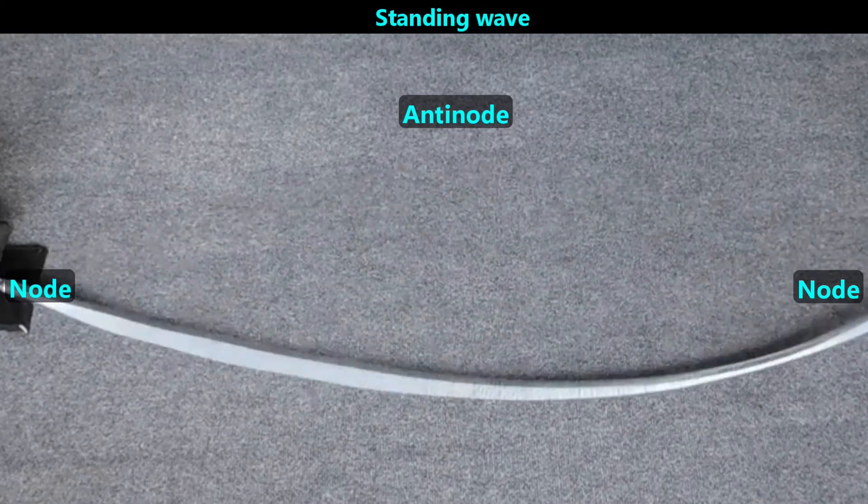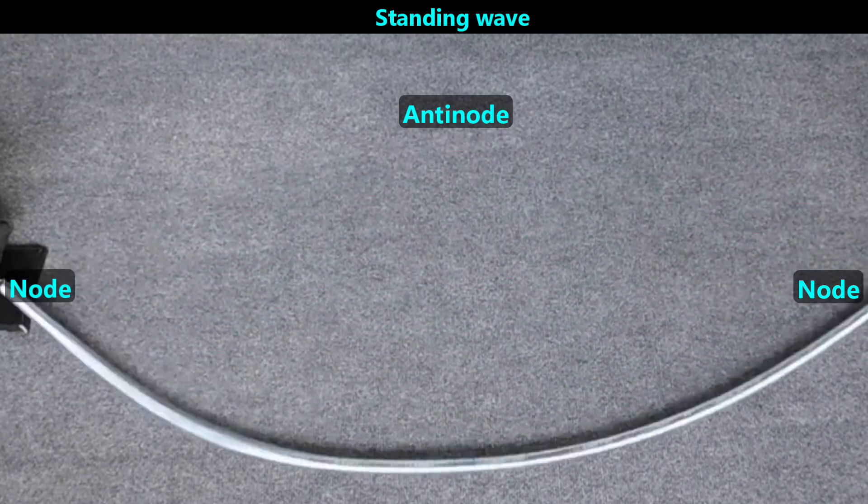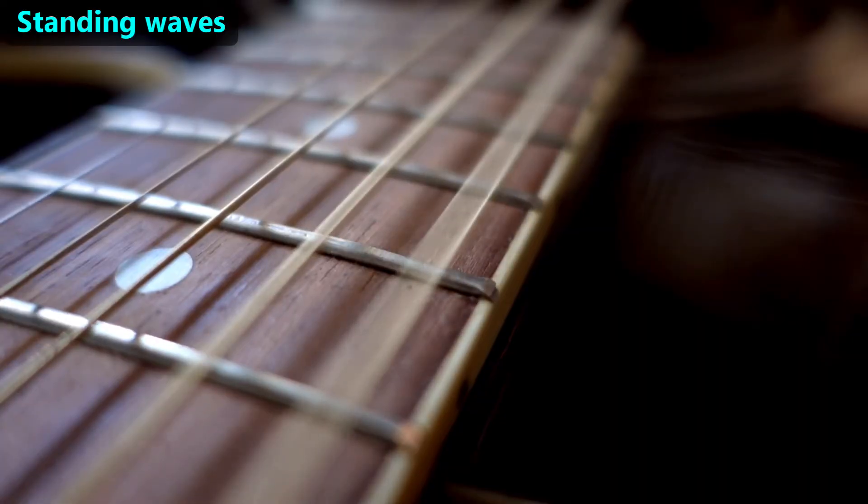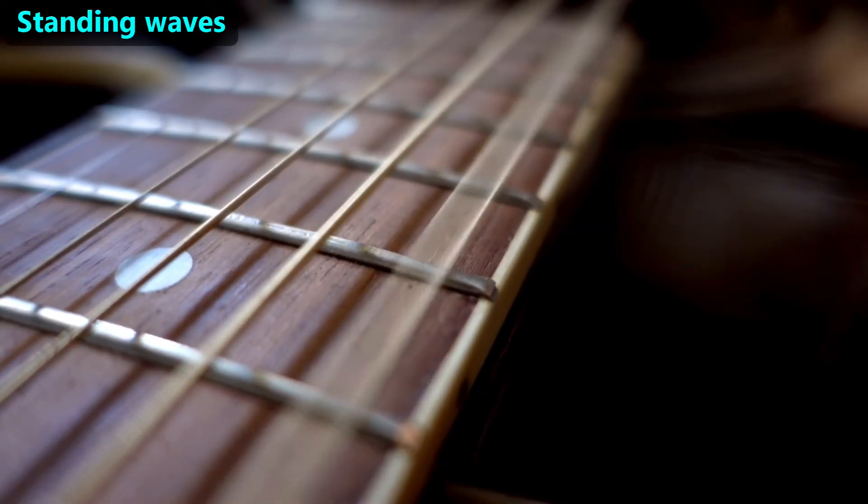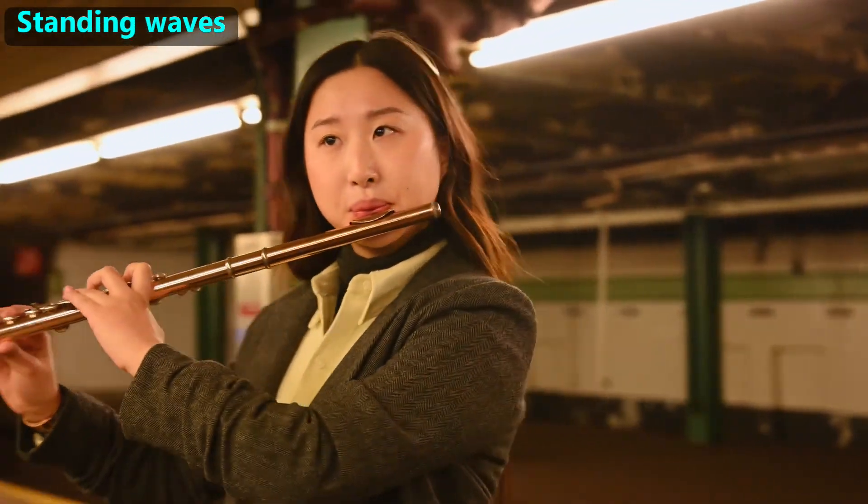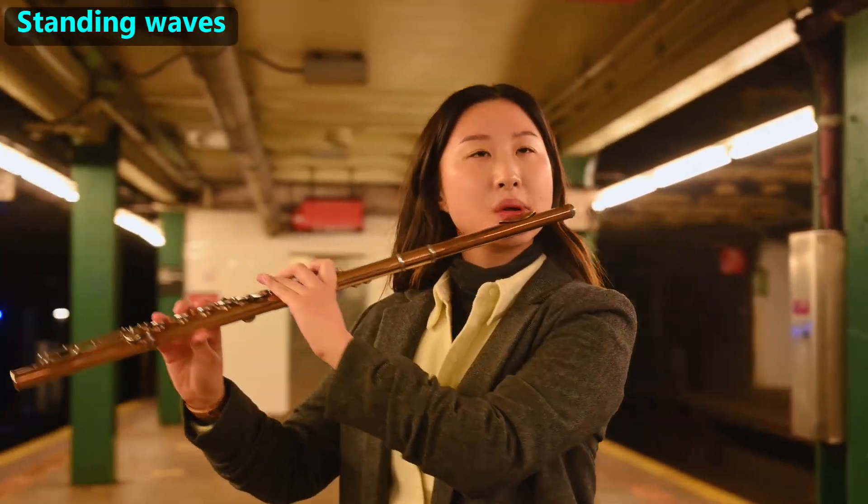If we change the wave frequency such that there's only one antinode, then the wave may look familiar. This is the same standing wave we get when we pluck a stringed instrument. Other musical instruments also use standing waves, such as wind instruments like flutes and organs.